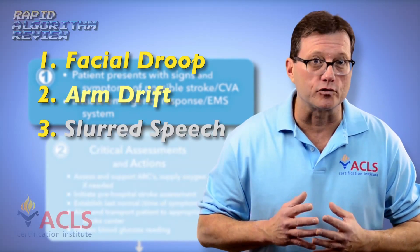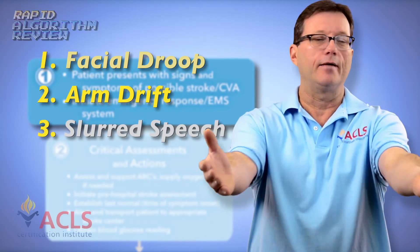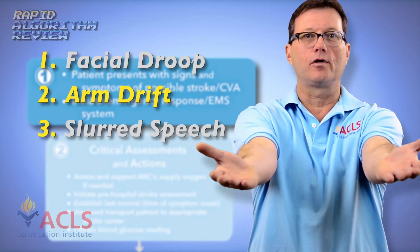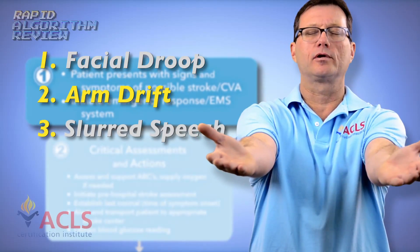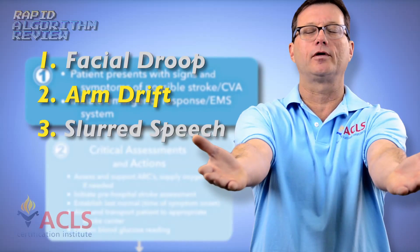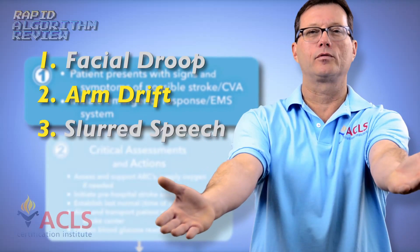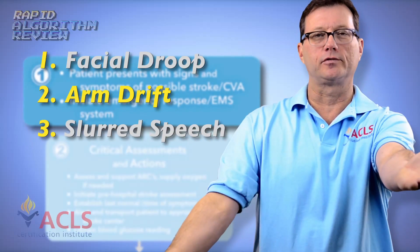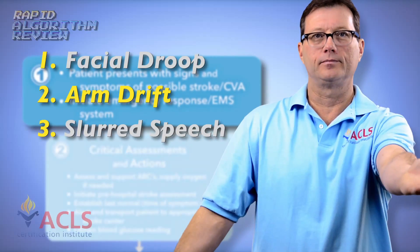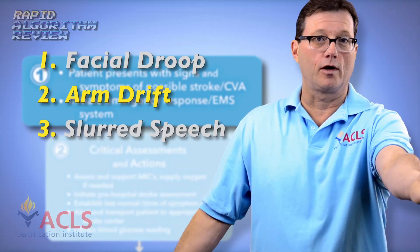Next is arm drift. Have the patient extend their arms, palm up, and close their eyes. We're going to watch them for 10 seconds and we're looking to see if one of those arms starts to drift away — that's positive for arm drift.